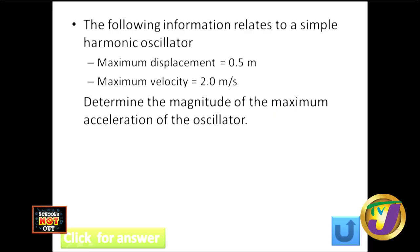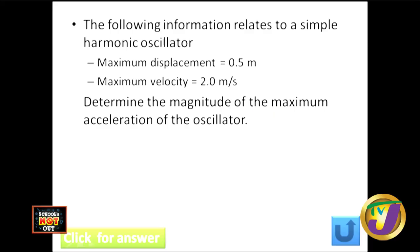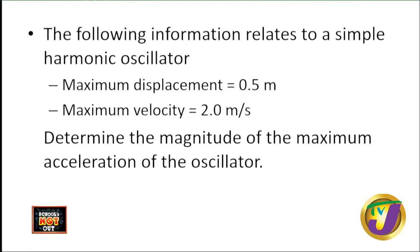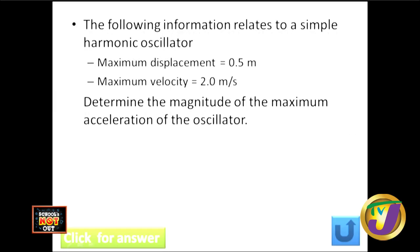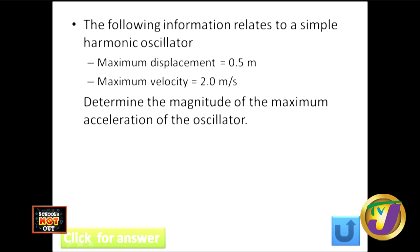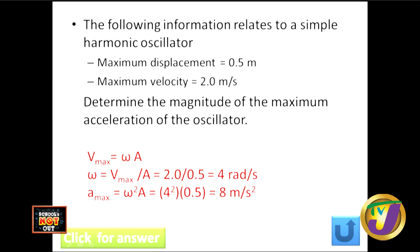Quick quiz: A simple harmonic oscillator has a maximum displacement of 0.5 m and a maximum velocity of 2 m/s. Determine the magnitude of the maximum acceleration. Since v_max equals ωA, the angular frequency ω equals v_max divided by A, which is 2 divided by 0.5, giving ω = 4 rad/s. The maximum acceleration is ω²A, which is 4² times 0.5, giving 8 m/s².